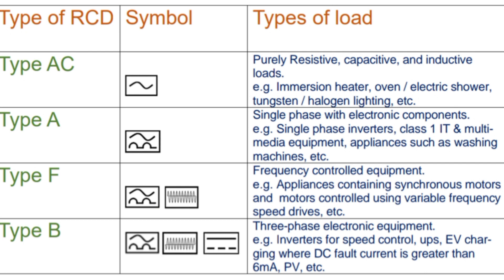The type A is identified by this symbol. The type A can be used in single-phase circuits with electronic components. Examples of these electronic components are single-phase inverters, class 1 IT and multimedia equipment, and appliances such as washing machines. This type of RCD can also withstand a superimposed smooth DC current up to 6 milliamp, and it will also detect the sinusoidal residual current that the type AC can. So the type A can work perfectly wherever the type AC can work, but it has an additional advantage of being able to work on single-phase rectifying circuits, which could create a pulsating DC residual current.